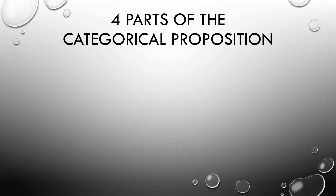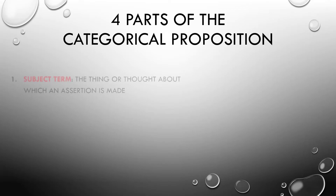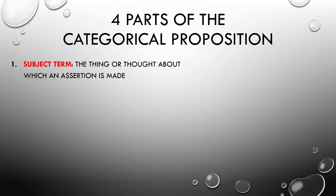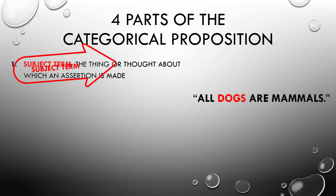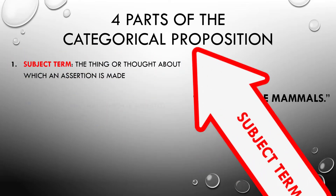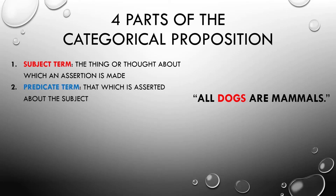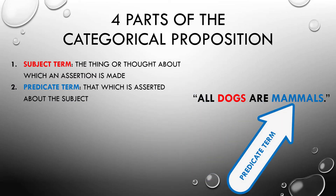Categorical propositions are made of more fundamental building blocks, and there are four of these as well. The most important are the two terms, since they relate what it is we're actually talking about. The first is the subject term: the thing about which an assertion is being made. In 'all dogs are mammals,' dogs is my subject. The second is the predicate term, that which is asserted about the subject — here the category mammals.